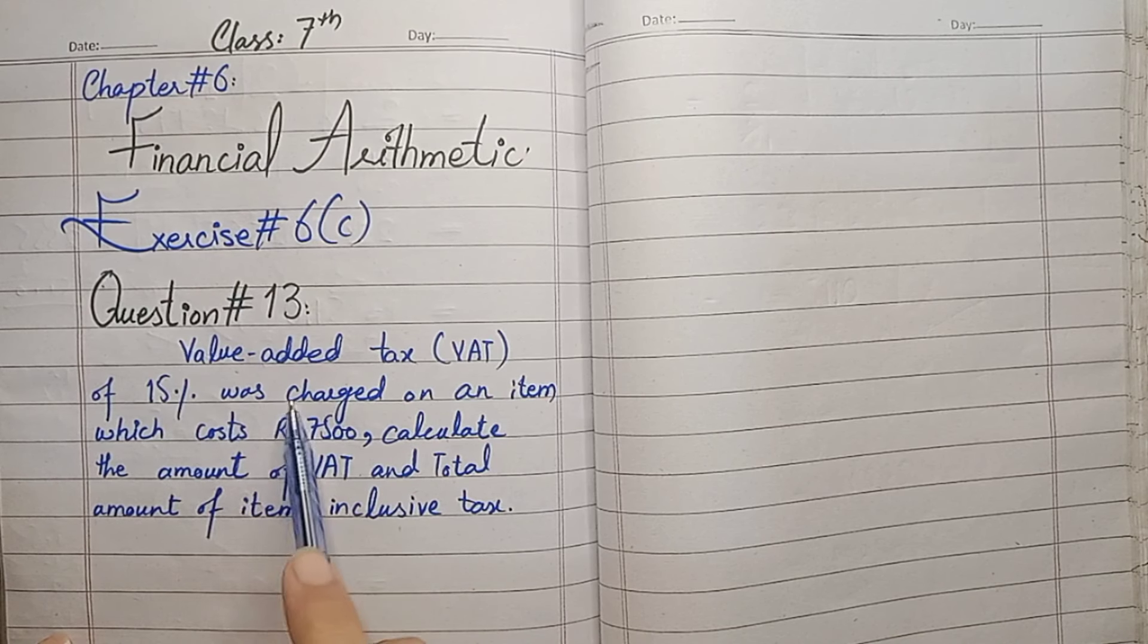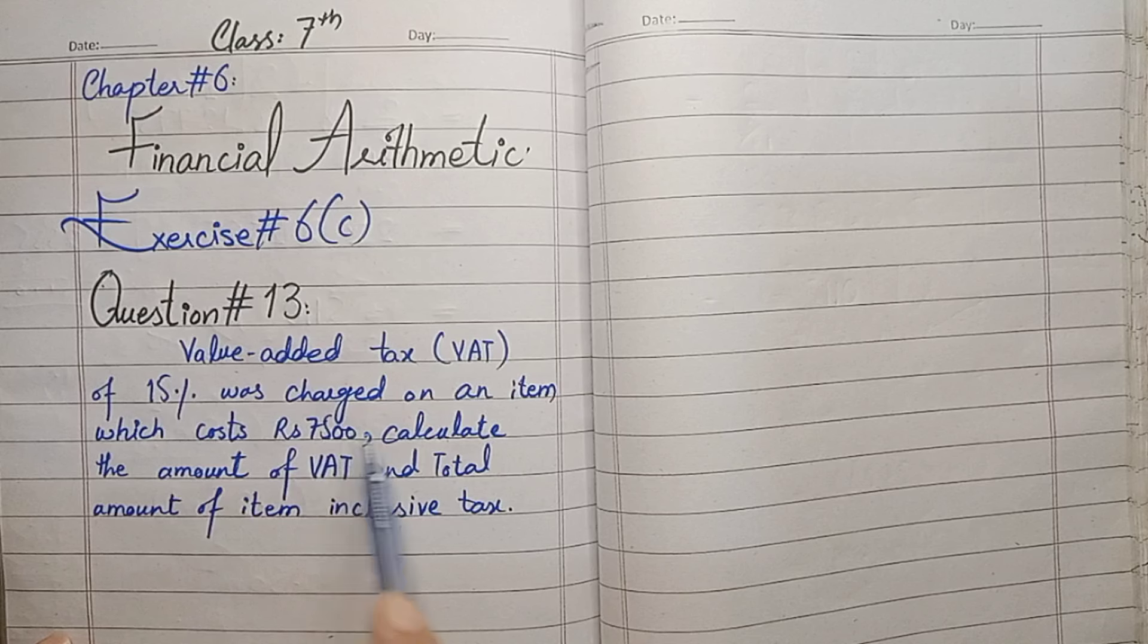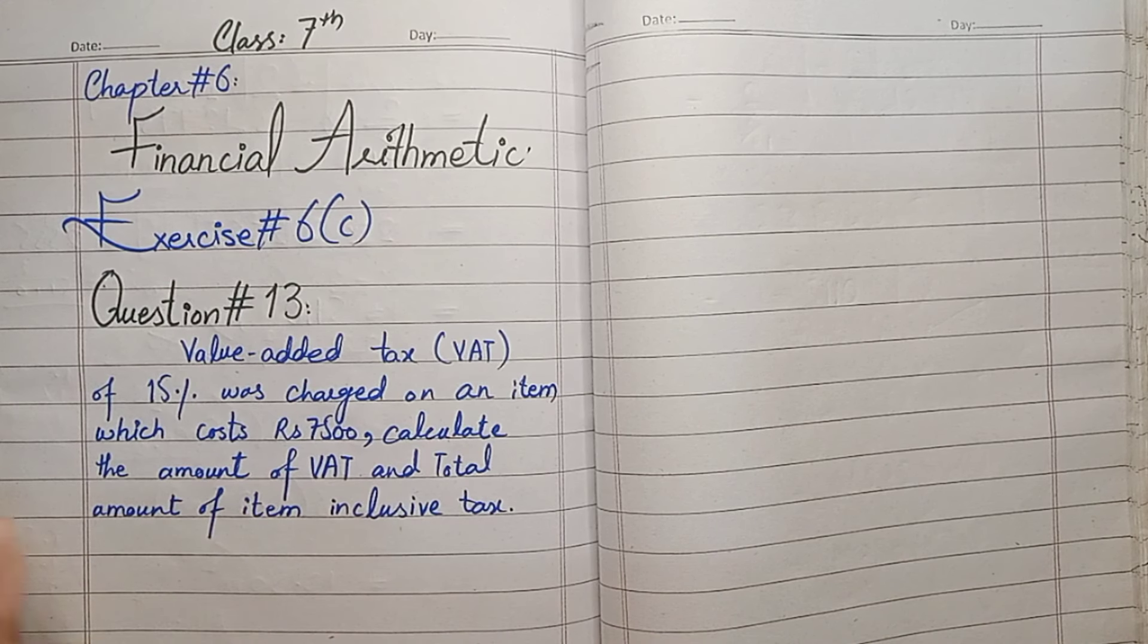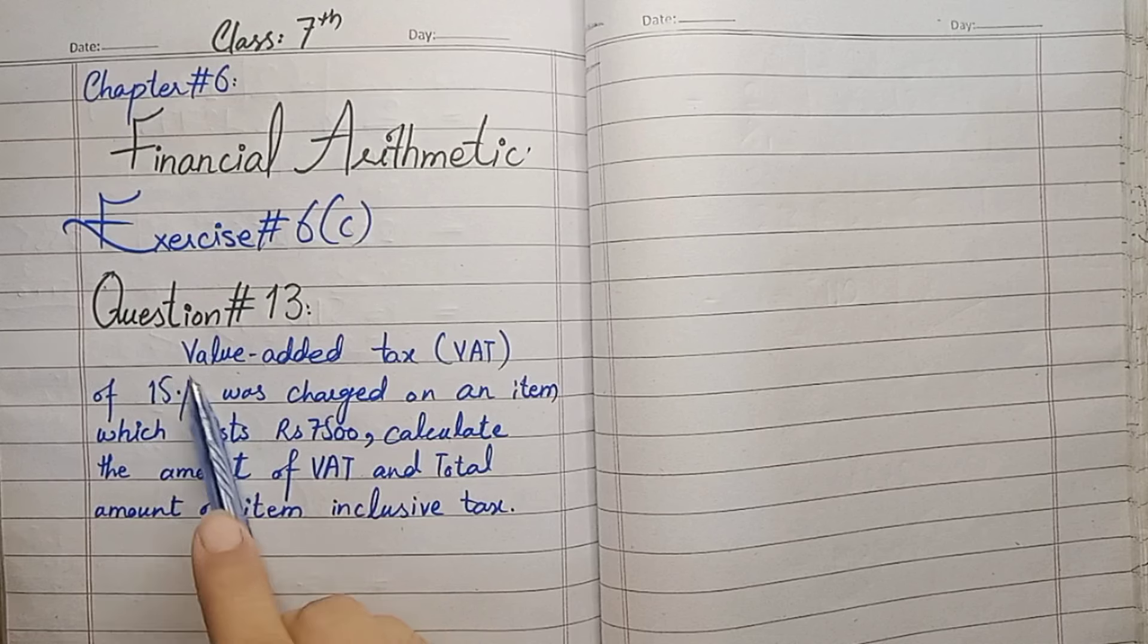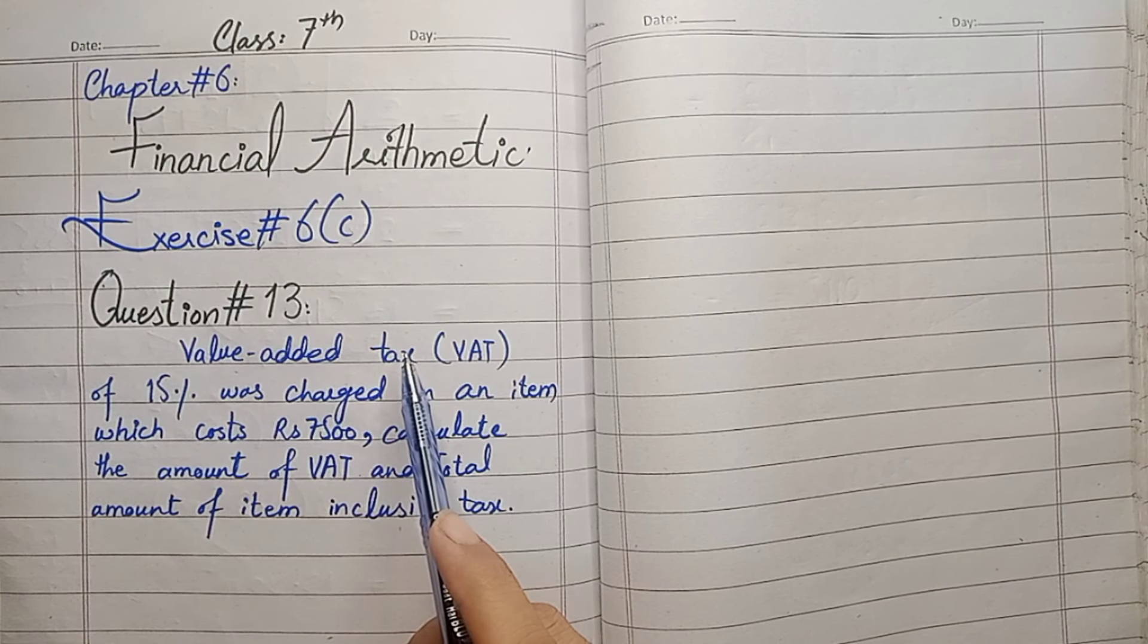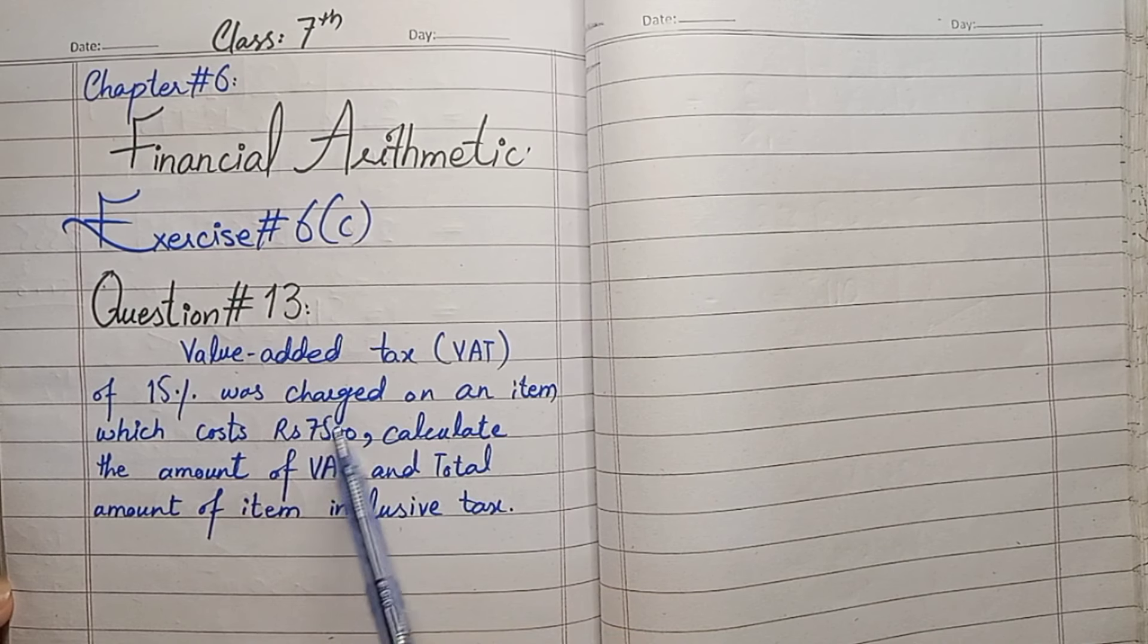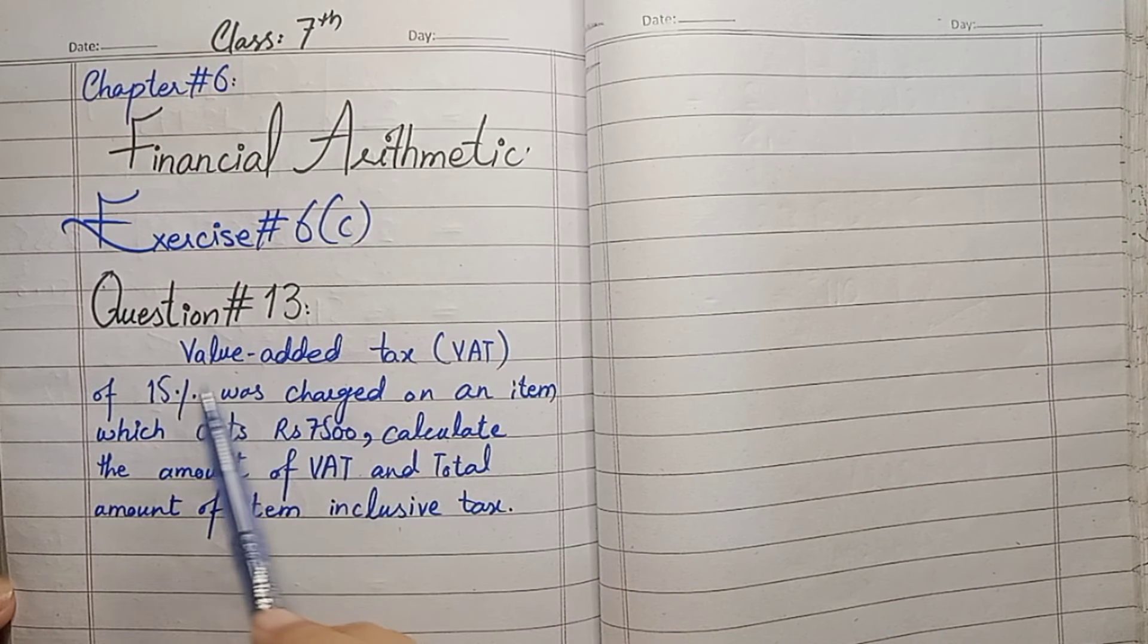Value Added Tax, VAT, 15% was charged on an item which costs Rs. 7,500. So there is a product with a price of Rs. 7,500 and the tax is Value Added Tax. If we start a business, we have to give tax. So a owner has started a business and he has paid tax on this product. The tax is 15%.